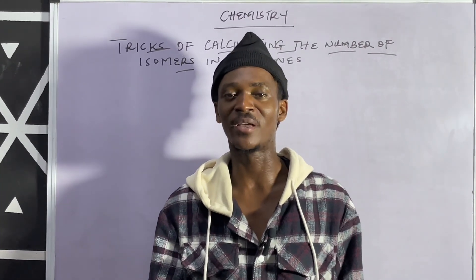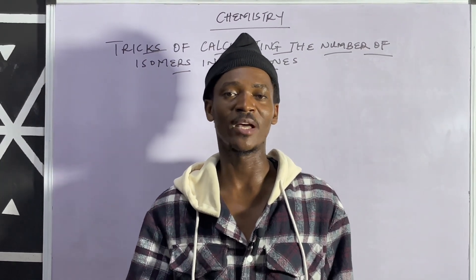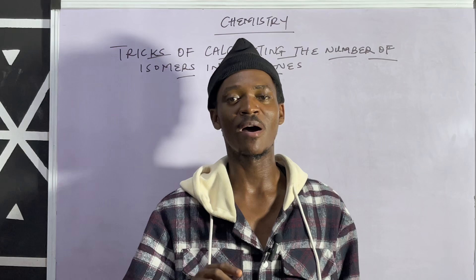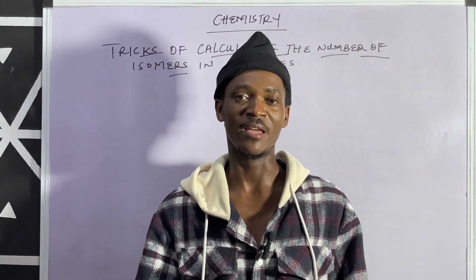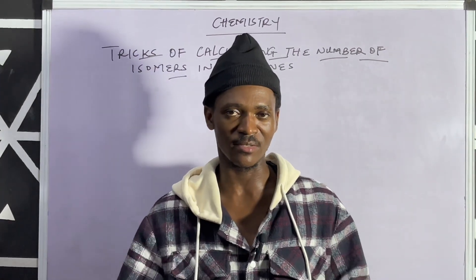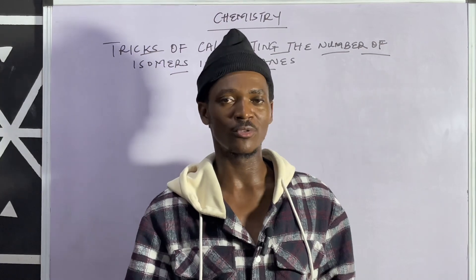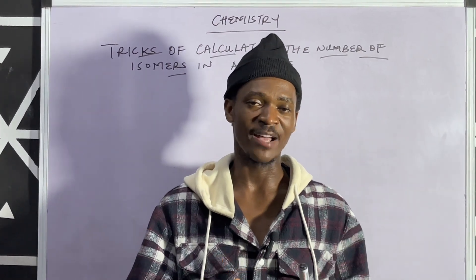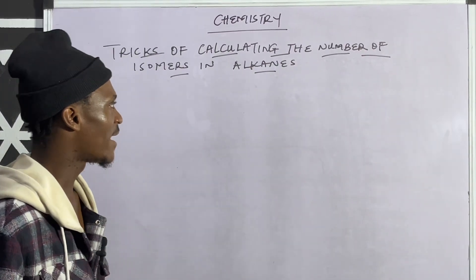Welcome back to my channel. This time we are going to have a quick trick on how we can get the total number of isomers in alkanes. We are only going to focus on the first 10 members of the alkanes, because for those writing exams — especially JAMB exams — they usually bring questions on the total number of isomers from the first to the tenth member of the alkane series. So I'm going to be dropping a code, like a formula, that you can use to easily obtain the total number of isomers of the first 10 members of the alkanes. Let's dive in.